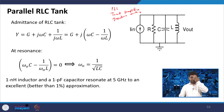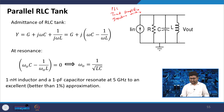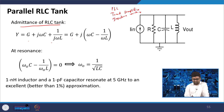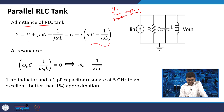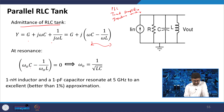Understanding resonance and quality factor is important. For a parallel RLC circuit — a resonant tank — you can represent the admittance as Y = G + jωC + 1/(jωL), which equals G + j(ωC − 1/ωL). During resonance, the imaginary part is zero because energy stored and energy lost are equal: ω₀C = 1/(ω₀L), and that equals zero.